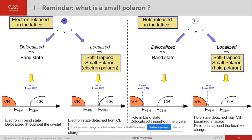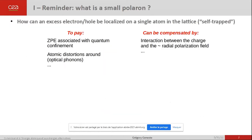Similarly, the hole corresponds to an empty state at the top of the valence band, and the self-trapped hole polaron corresponds to an empty state in the gap detached from the valence band.